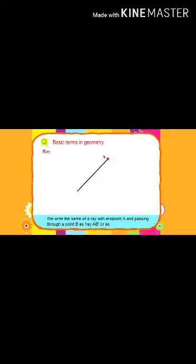We write the name of a ray with end point A and passing through a point B as ray AB. The arrowhead denotes the direction the ray extends in. There is no arrowhead over the end point.